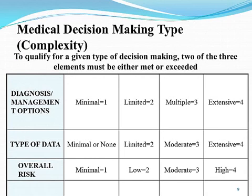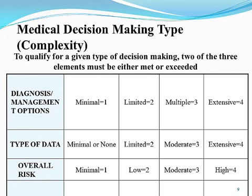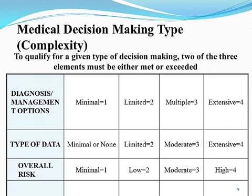At Palmetto GBA and many other entities, we needed to quantify the medical decision-making component. The guidelines simply state that complexity could be straightforward, low, moderate, or high, using verbiage like minimal, limited, multiple, or extensive, with no real definitions for those terms. We capture it using a point system or quantifying method — not a perfect system, but it helps determine medical decision-making. It also helps with consistency within Palmetto GBA and among coders.